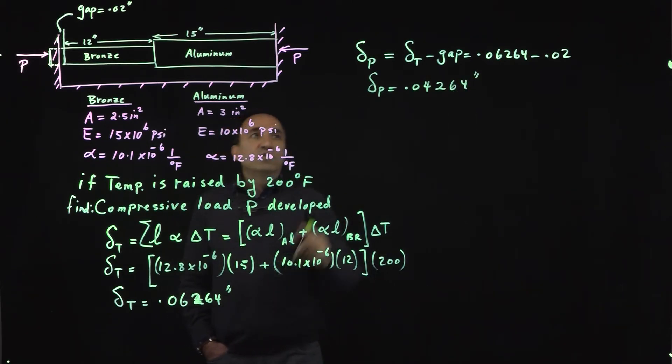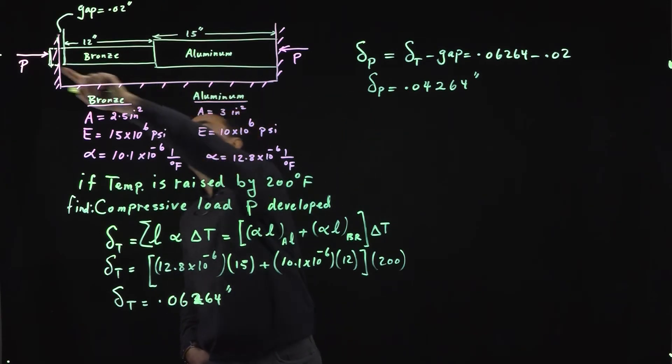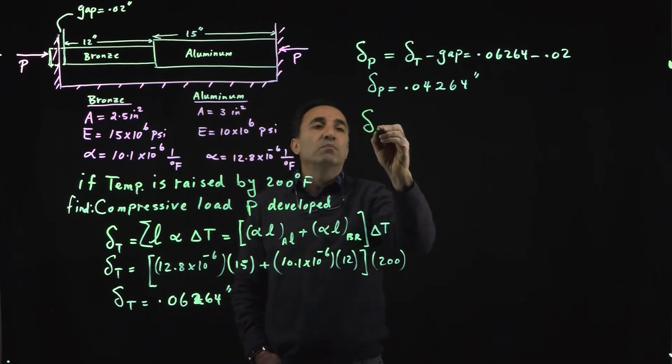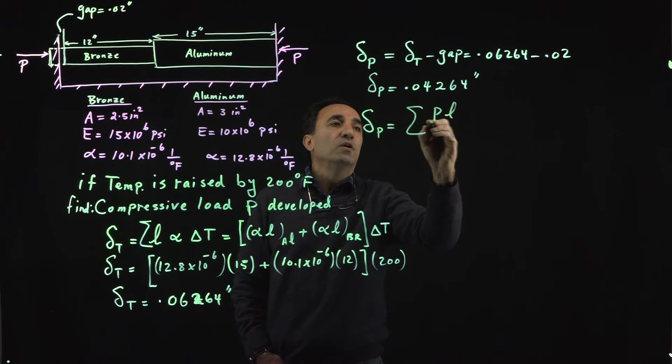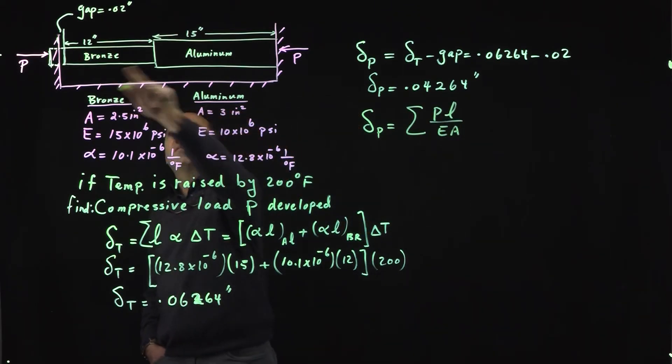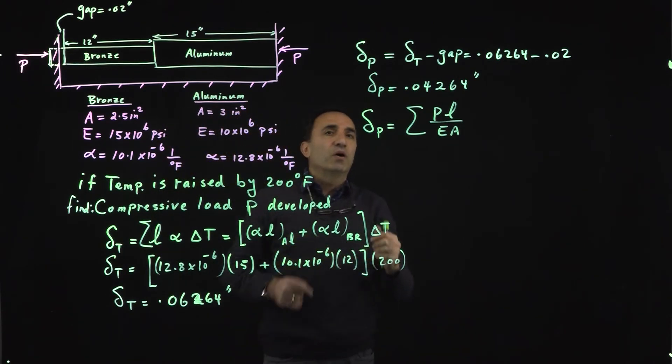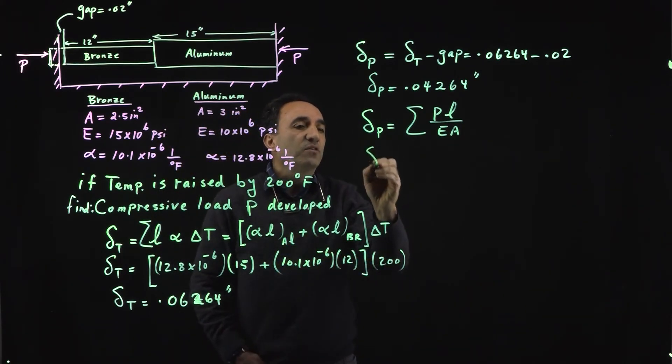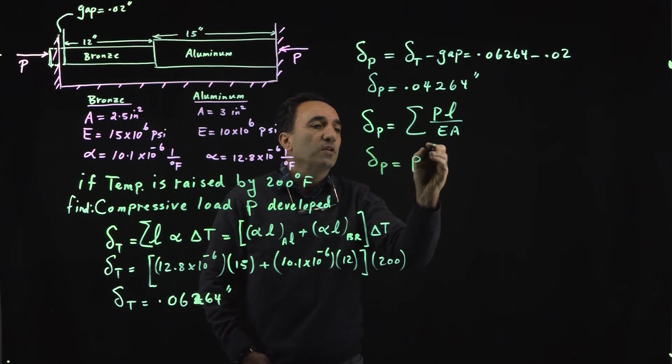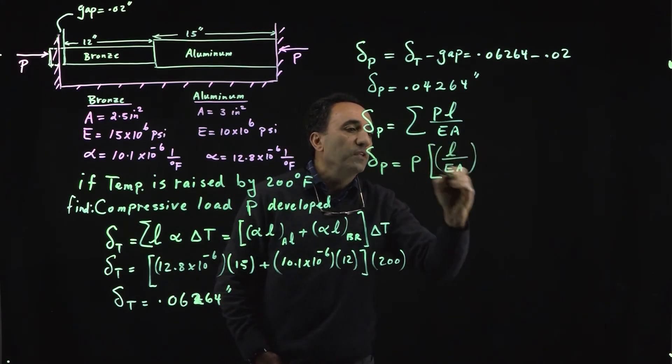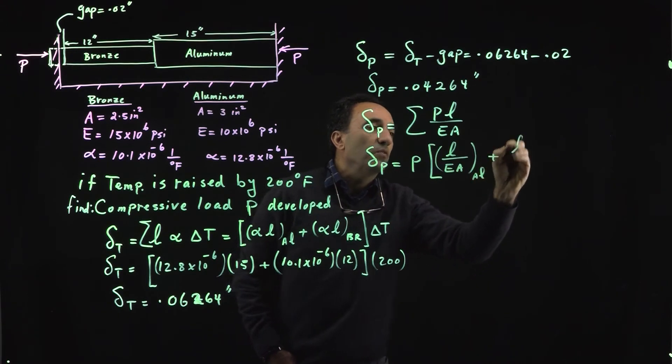Now how do we use this to find that compressive load? In this chapter related to axially loaded members we know that delta P is equal to summation of PL over EA. The compressive load developed here is the same load for aluminum as well as the bronze. If I factor load P out, that would be L over EA for the aluminum plus L over EA for the bronze.